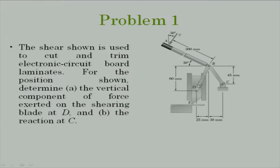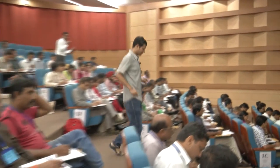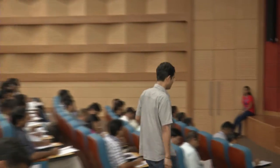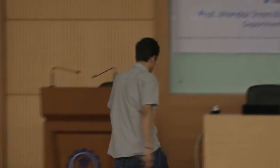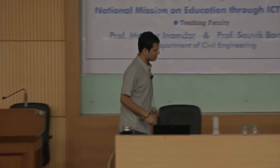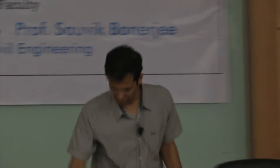We know the orientation of this member because we know the two distances, so we know the angle. The moment we know this angle, if the force in DB is given, the vertical and horizontal force are immediately obtained. P is not unknown - you can obtain the answer in terms of P and then report what the value is.